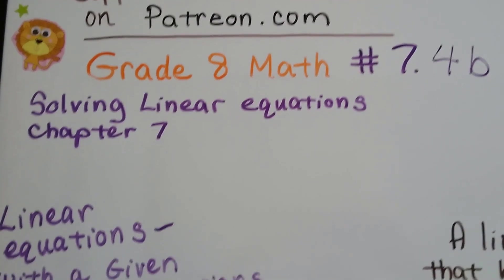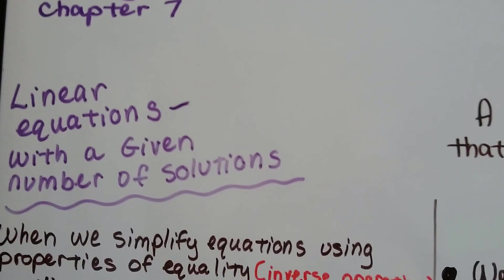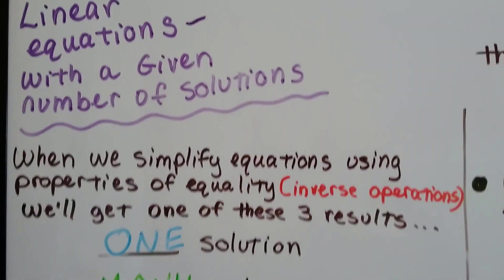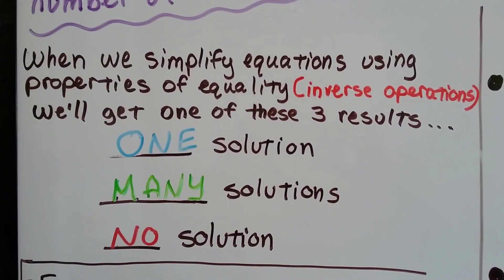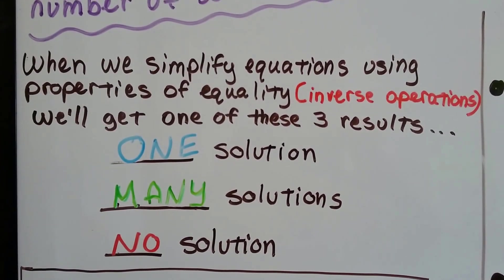Grade 8 math number 7.4b, linear equations with a given number of solutions. We sort of talked about this in the last video when we simplify equations using properties of equality.